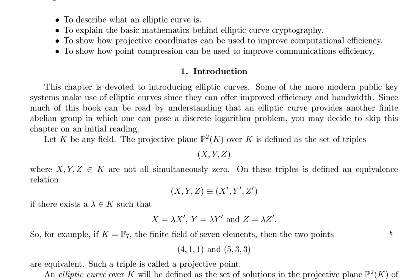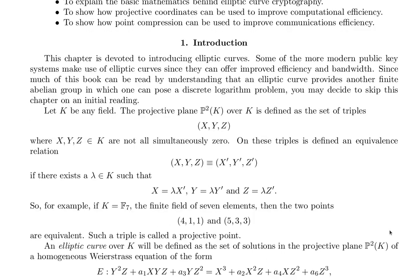So for example, if K is equal to F_7, the finite field of 7 elements, then the two points (4, 1, 1) and (5, 3, 3) are equivalent. Such a triple is called a projective point.